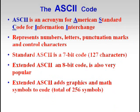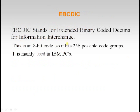Now let us see ASCII code. ASCII stands for American Standard Code for Information Interchange and is mainly used for representing numbers, letters, and special symbols like punctuation marks and control characters. Standard ASCII is a 7-bit code representing 127 characters. Extended ASCII is an 8-bit code representing 256 characters and adds graphical and mathematical symbols. EBCDIC stands for Extended Binary Coded Decimal for Information Interchange, designed by IBM for IBM PCs; it is an 8-bit code representing 256 characters.